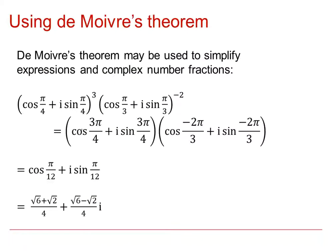So we applied the theorem twice, so we got for the power 3 gave us 3 times pi by 4, the power minus 2 gave us minus 2 lots of pi by 3, and then when we multiply these complex numbers together we add the arguments and we simplify the answer where necessary.